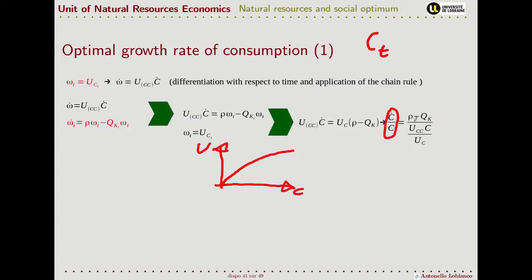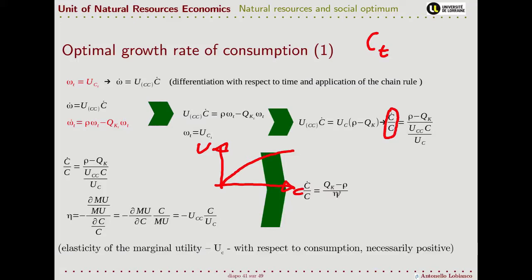All of this is negative, so we can rewrite these terms in this way, where eta is the elasticity of the marginal utility with respect to consumption. This quantity is positive. We can hence relate the direction of growth with the relative magnitude of the marginal productivity of capital and the social discount rate.